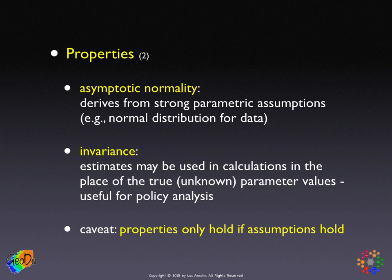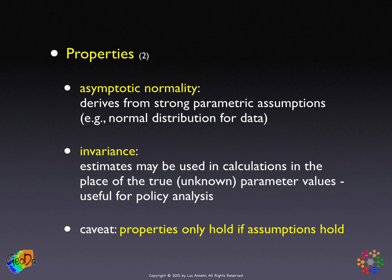Because of the strong parametric assumptions, central limit theorems kick in and we get asymptotic normality. A final, subtler property is the invariance property, which is extremely useful in calculations: we can essentially replace the true unknown parameter values in any calculation by their maximum likelihood estimates. This is very useful in policy analysis — for example, to calculate elasticities, cost-benefit ratios, or similar quantities.